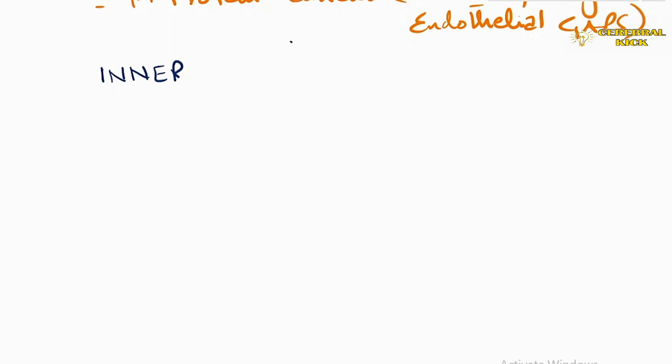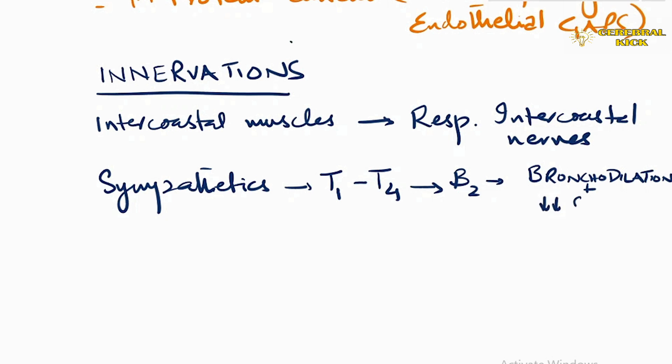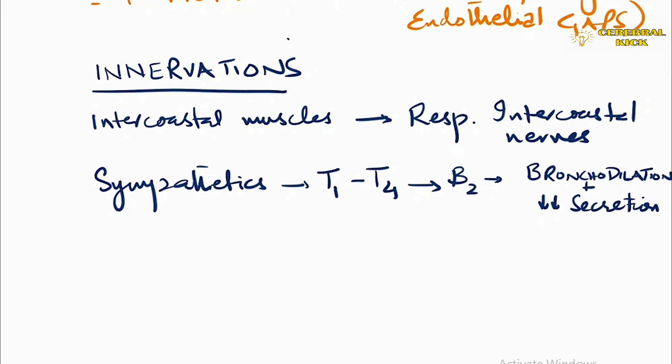The innervation of lungs: the intercostal muscles are supplied by their respective intercostal nerves, so it is a very rich area of nerves. The sympathetic from T1 to T4 stimulate beta-2 mainly, causing bronchodilation and decreased secretions. As for the parasympathetics, it is carried through vagus nerve through muscarinic receptors, causing bronchoconstriction and increased secretions.